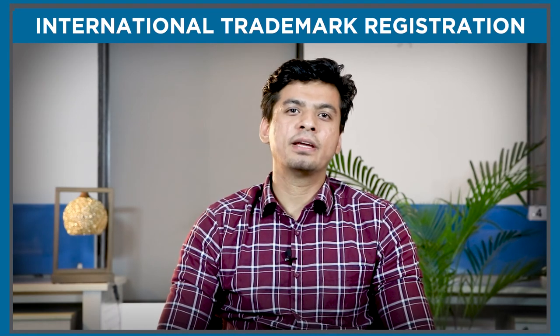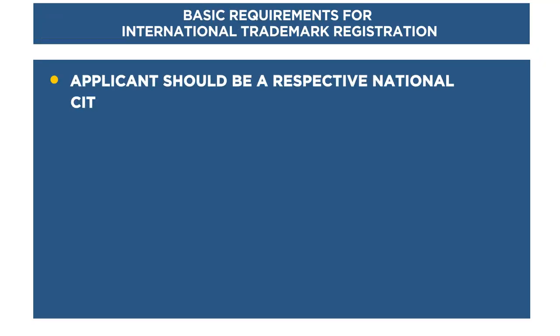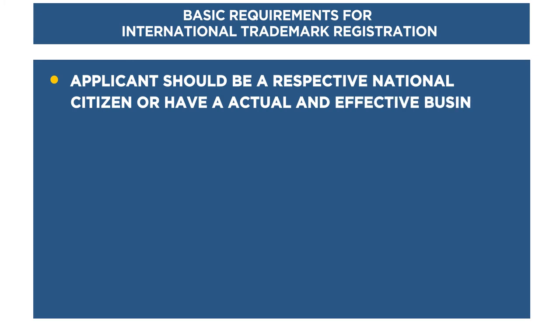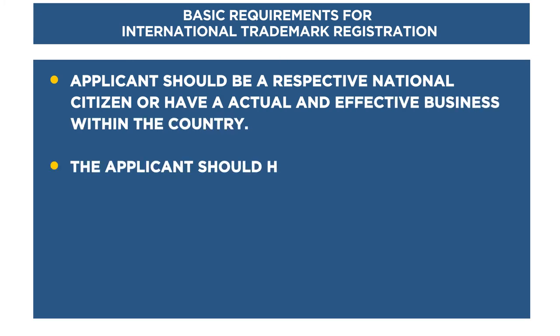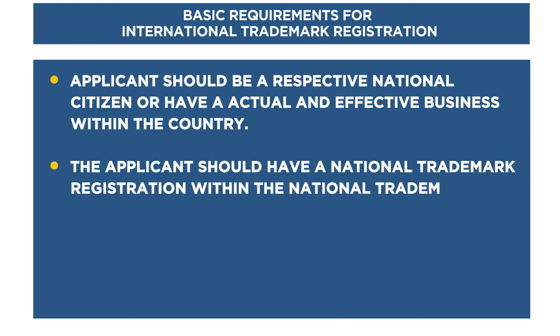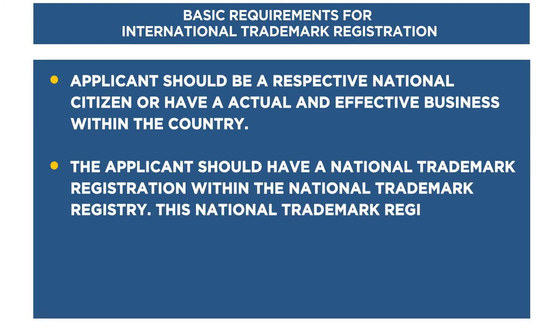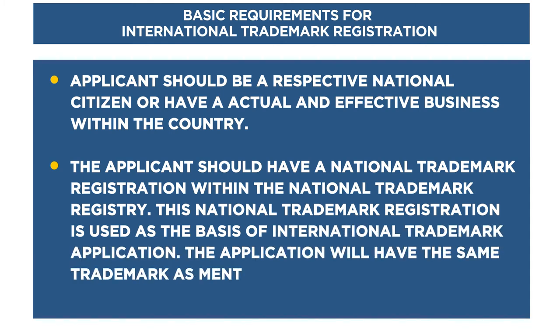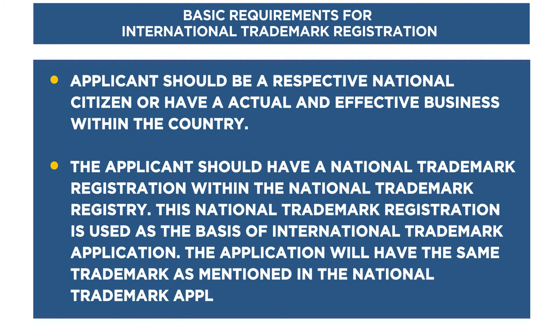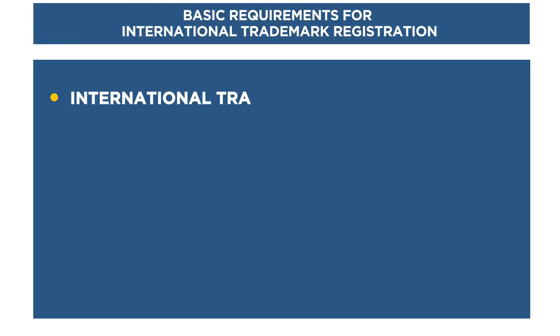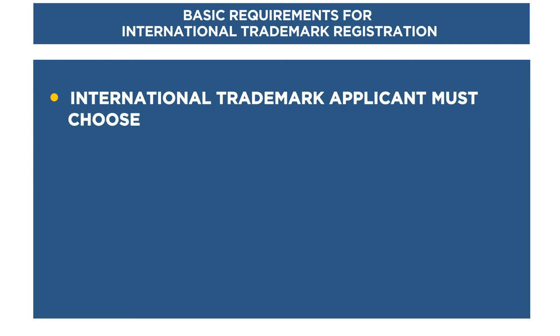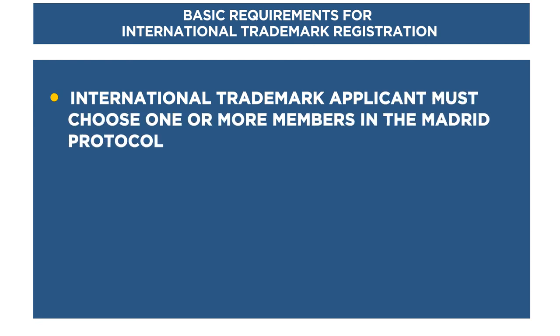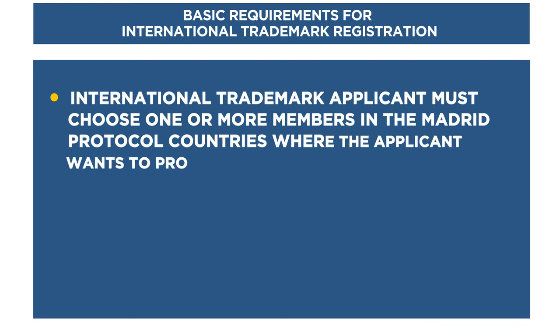Before moving to the procedure, here are the basic requirements for international trademark registration. Number one, the applicant should be a respective national citizen or have an actual and effective business within the country. Second, the applicant should have a national trademark registration within the national trademark registry, which is used as the basis of the international trademark application. The application will carry the same trademark as mentioned in the national trademark application or registration. Third, the international trademark applicant must choose one or more member countries of the Madrid Protocol where they want to protect their trademark.